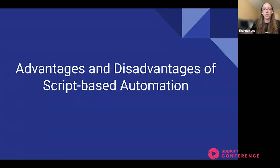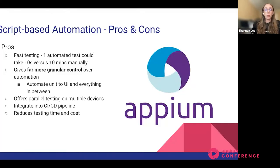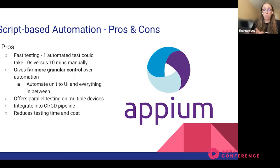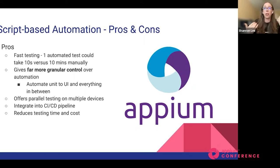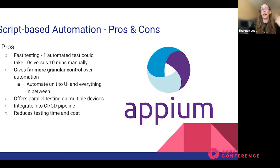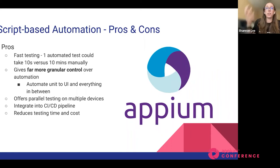Let's dive into some advantages and disadvantages of script-based automation. The pros: fast testing — automating a test case is far faster than doing it manually. One automated test case taking 10 seconds versus 10 minutes manually saves significant time. Script-based automation also gives you far more granular control, lets you programmatically drive your automation, automate between unit tests and UI tests, run parallel testing on multiple devices, easily integrate into your CI/CD pipeline, and significantly reduces time and cost. Appium is a great example of a script-based automation framework.